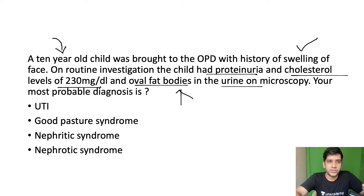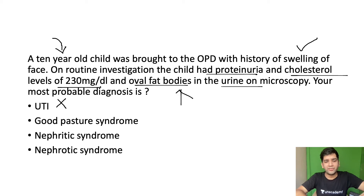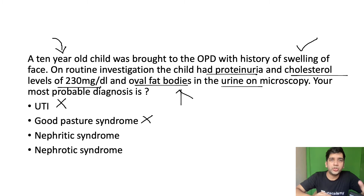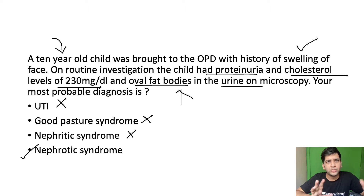So the most probable diagnosis is nephrotic syndrome. It's definitely not UTI, because that primarily presents with hematuria and pain. Goodpasture syndrome presents in the nephritic range, so I'm ruling that out too. I'm also ruling out nephritic syndrome itself. The only possibility based on the information given — proteinuria, hypercholesterolemia, and oval fat bodies — is nephrotic syndrome.